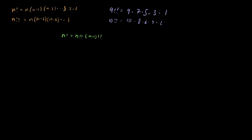The only other thing I'll say about the double factorial function is that it satisfies two really nice properties for even and odd choices of n, which allow us to rewrite double factorials in terms of single factorials. For n even, we have the property that n double factorial is equal to 2 to the n over 2 times n over 2 factorial.